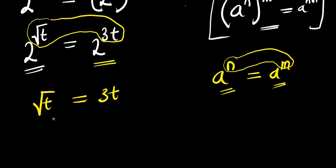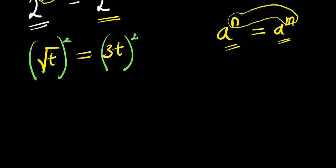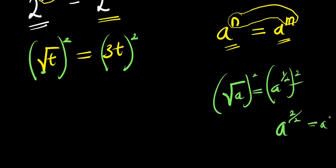The next step is to eliminate the square root by squaring both sides. Square root of a is the same as writing a to the power of 1 over 2. If you raise this to the power of 2, you multiply the exponents: 2 times 1 over 2 equals 2 over 2, which equals 1. So the square root cancels out on the left side.